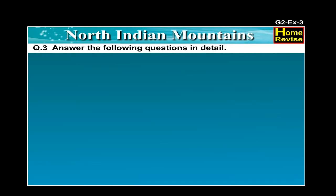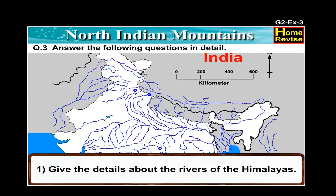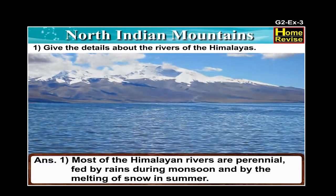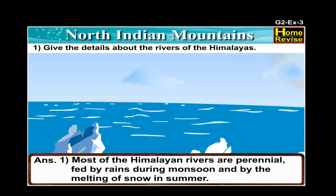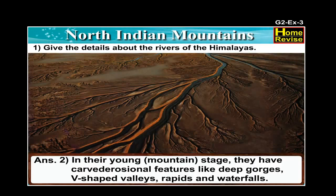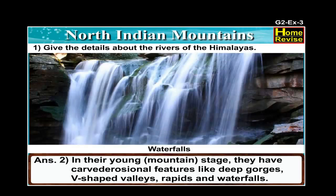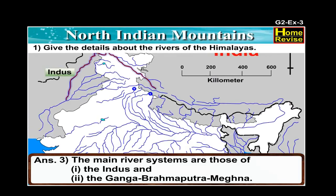Question three: Answer the following questions in detail. Number one: Give the details about the rivers of the Himalayas. Most of the Himalayan rivers are perennial, fed by rains during monsoons and by the melting of snow in summer. In the young mountain stage, they have carved erosional features like deep gorges, V-shaped valleys, rapids and waterfalls. The main river systems are the Indus and the Ganga-Brahmaputra-Meghna.